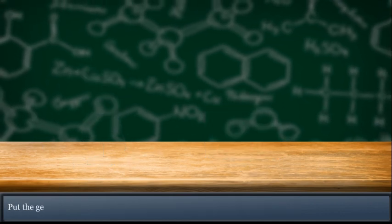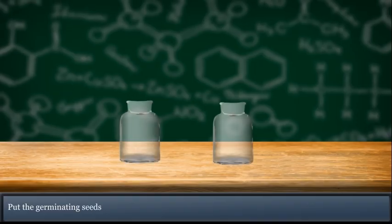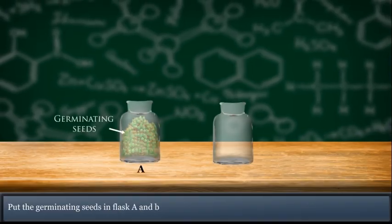Put the germinating seeds in flask A and boiled seeds in flask B.